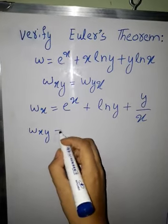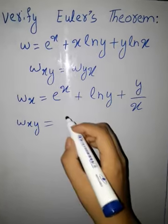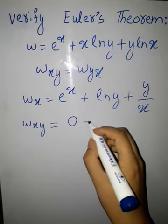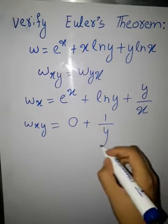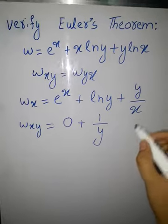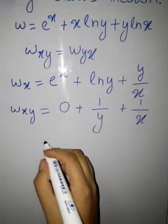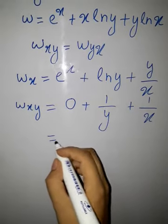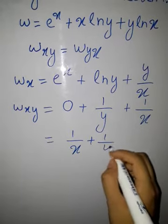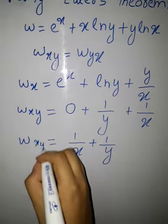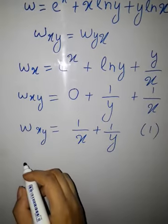Now take the derivative of this function with respect to y. We have w_xy: the derivative of e^x with respect to y is 0, plus the derivative of ln(y) with respect to y is 1/y, plus the derivative of y/x with respect to y is 1/x. So w_xy equals 1/y + 1/x. Let us call this equation 1.